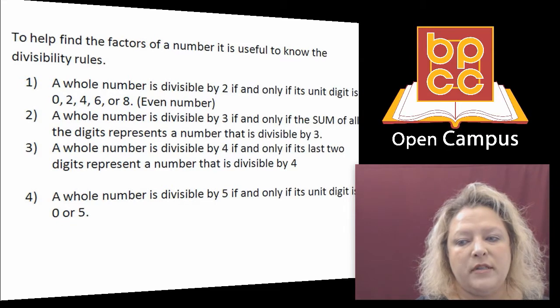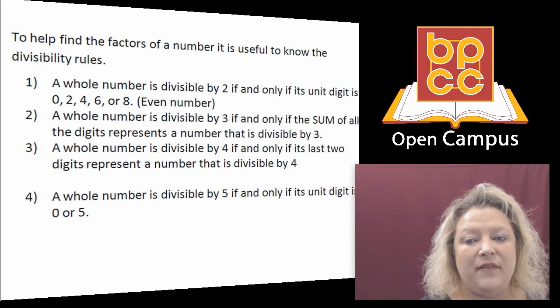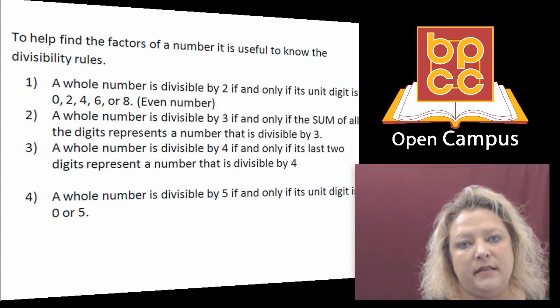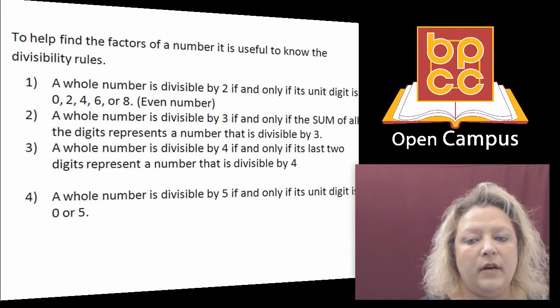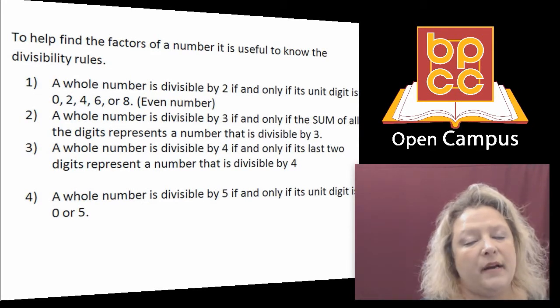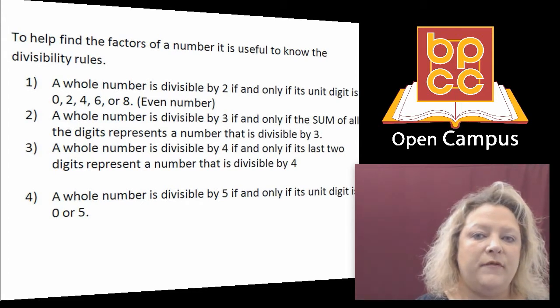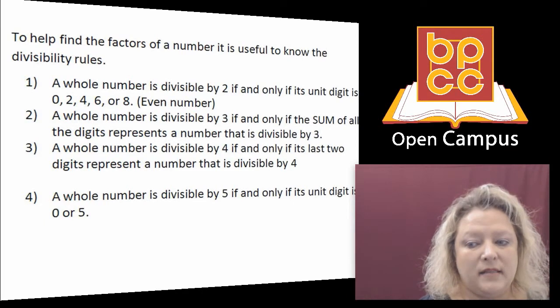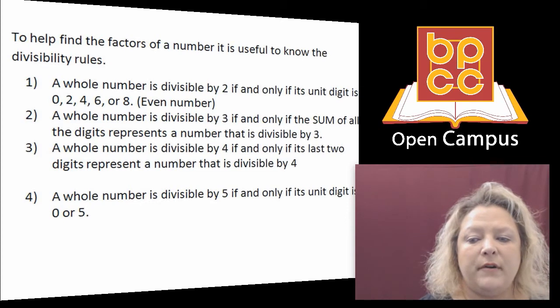Whole numbers that are divisible by 2 would be numbers that end in an even digit, such as 0, 2, 4, 6, 8. All of those digits are even, so if the number ends in one of those, 2 will automatically divide into it an even number of times. With 3, if you add all the digits in the number together and you can divide that sum by 3, then you can divide the whole number by 3.